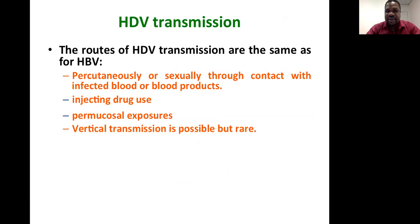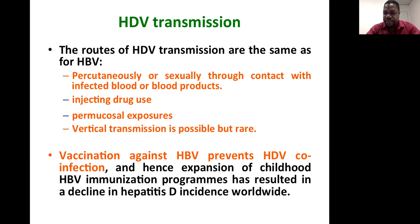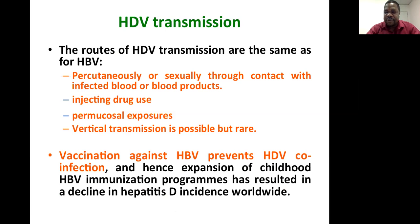The routes of hepatitis D transmission are the same as for hepatitis B — mainly percutaneously or sexually through contact with infected blood or blood products. Injecting drug use, mucosal exposure, and vertical transmission are also possible routes, though vertical transmission is rare. Vaccination against hepatitis B prevents hepatitis D co-infection, and the expansion of childhood hepatitis B immunization programs has resulted in a decline in hepatitis D incidence worldwide.